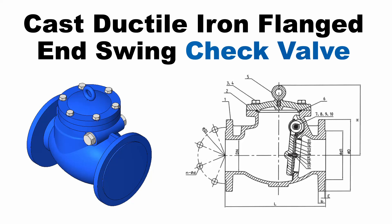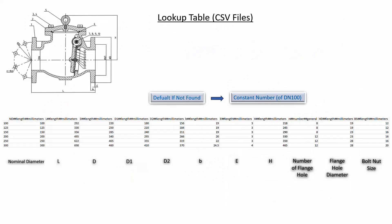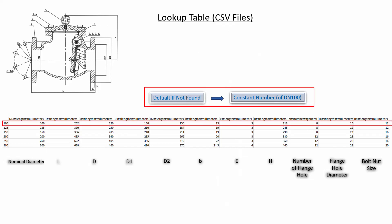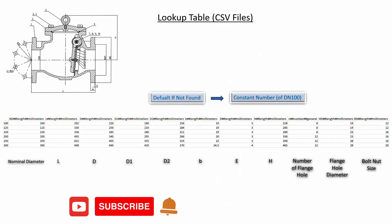I will refer to the dimensions in the picture to create the parameters. This is a lookup table CSV file. Its data are referred from the manufacturer specifications. I will use this lookup table CSV file to create the parametric family. There are DN100 to DN300. I will use this formula for default if not found. Before going to Revit, I would like to request that you subscribe to the channel and click the notification bell for the next video. Ok, let's go to Revit.